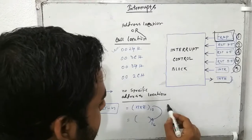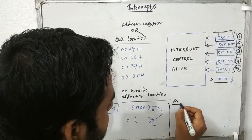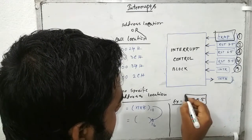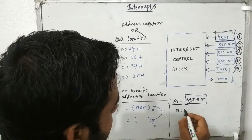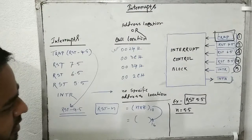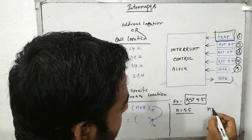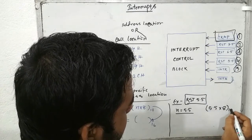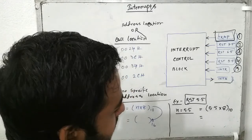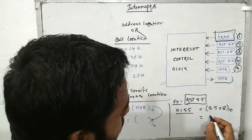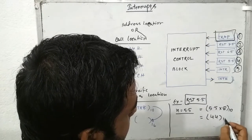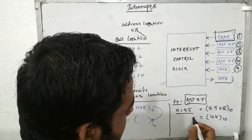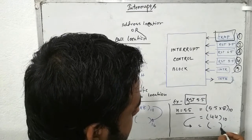Let's take an example. Suppose we have RST 5.5, where N is 5.5. First, multiply N by 8: 5.5 × 8 = 44. That is our decimal value. Now let's convert 44 into hexadecimal. Divide 44 by 16.